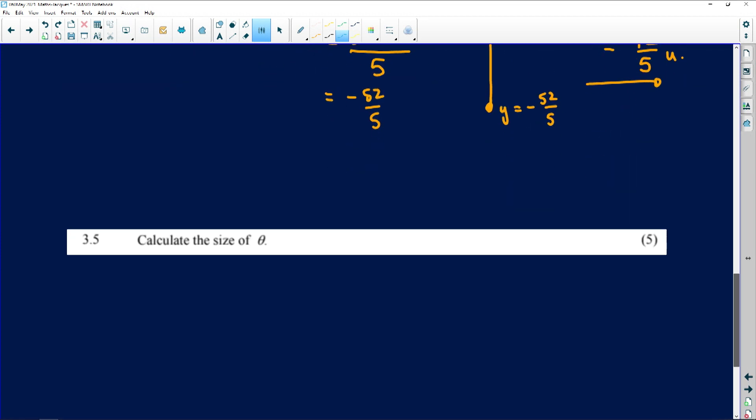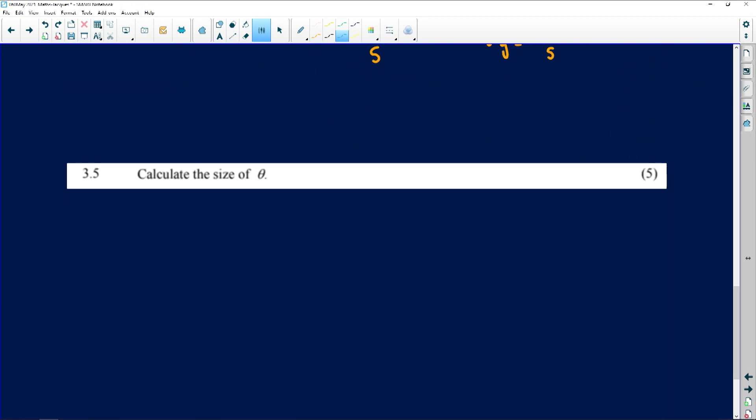For theta, just a quick reminder, we had that situation. That was theta. We put a horizontal through. We said that's alpha 1. This is alpha 2 down here. This had a gradient of a half, and that had a gradient of minus 2 fifths. So how do I find alpha 1? Well, I inverse tan of a half. If I take the inverse tan of a half, I get 26.57 degrees.